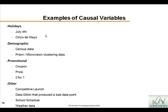You should be including causal variables if you're not. Examples include buy-one-get-one-free promotions, two-for-ones, holidays, price, and promotion data. All of this information should be included in the forecasting process.